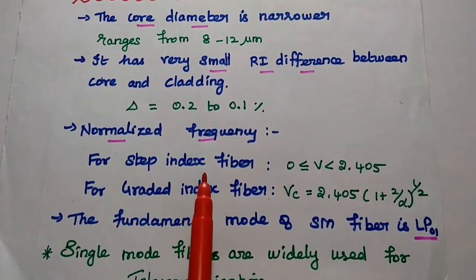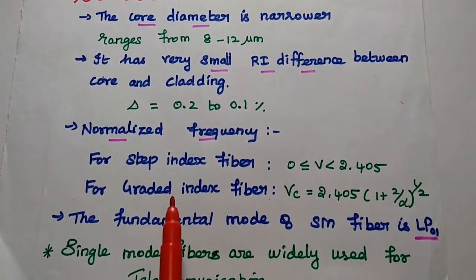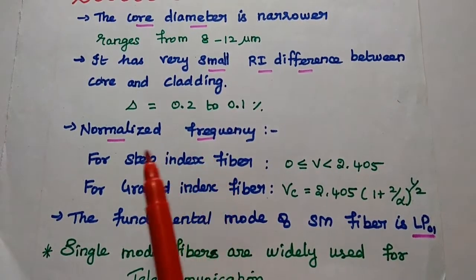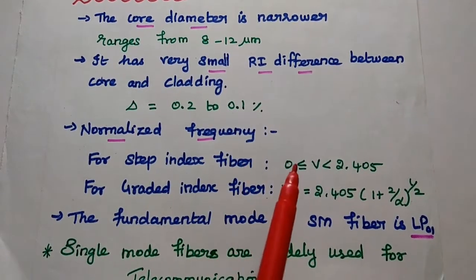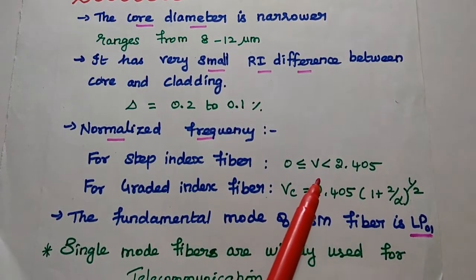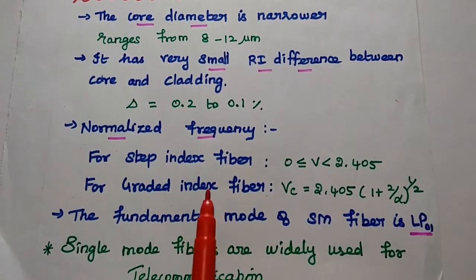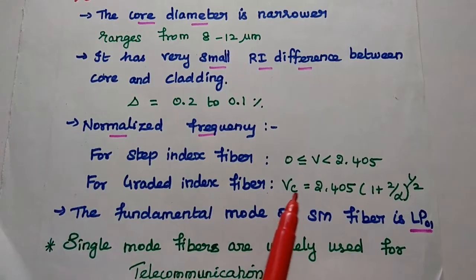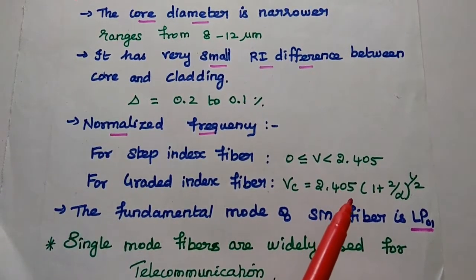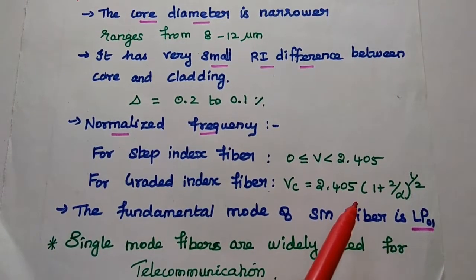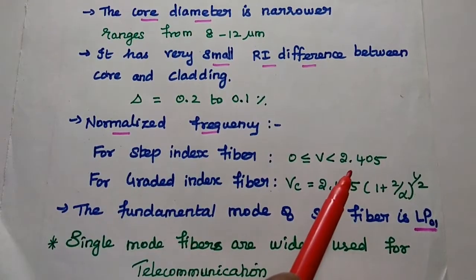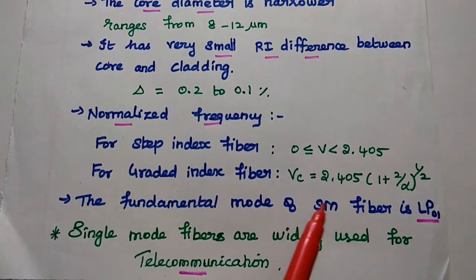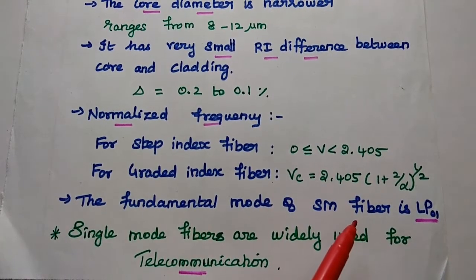One is step index fiber and the next one is graded index fiber. For step index single mode fiber, the normalized frequency ranges from 0 to 2.405. For graded index fiber, its normalized cutoff frequency is 2.405 into (1 + 2/α)^(1/2). The fundamental mode of single mode fiber is always LP01. This is very important.